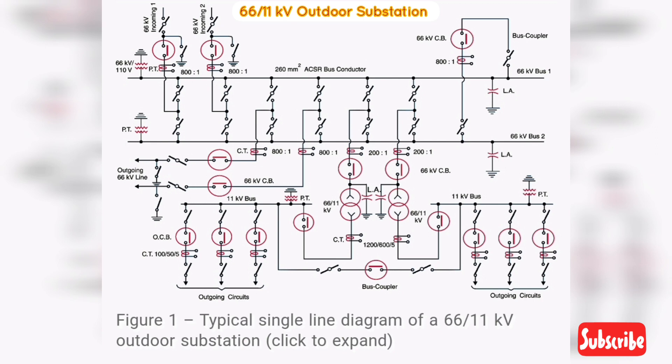There are two 66 kV incoming lines, marked Incoming 1 and Incoming 2, connected to the bus bars. Such an arrangement of two incoming lines is called a double circuit.